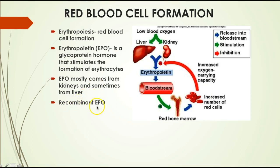Recombinant EPO is something athletes sometimes use to increase their red blood cell count, which is not healthy at all. Having too many red blood cells can increase the viscosity of the blood, which can be dangerous.